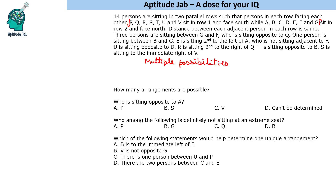There are three persons sitting between G and F, and F is opposite to Q. So F is placed here with Q sitting directly opposite. Now, three persons could be on one side — one, two, three — and then G could be here, or three persons could be on the other side. Let us place F somewhere in the center so we can extend on both sides.